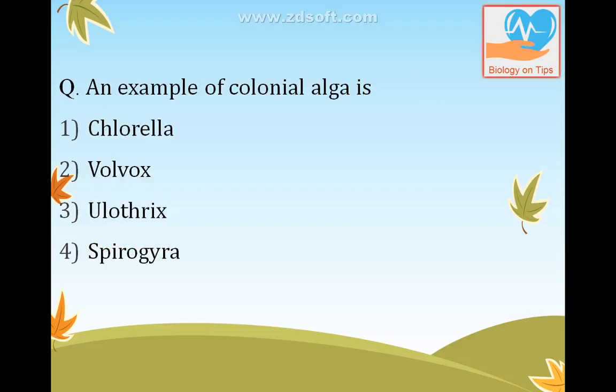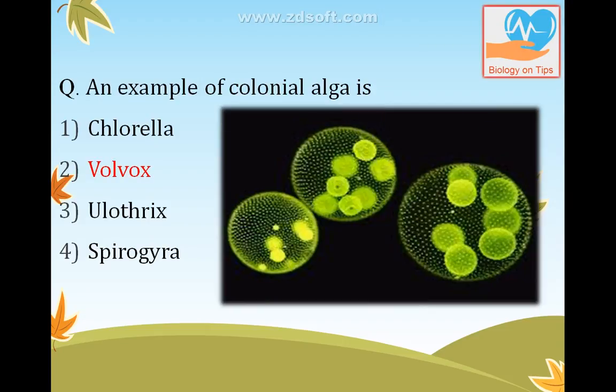An example of a colonial alga is Volvox. You can see in the image a diagram of Volvox and how it looks in a colony.